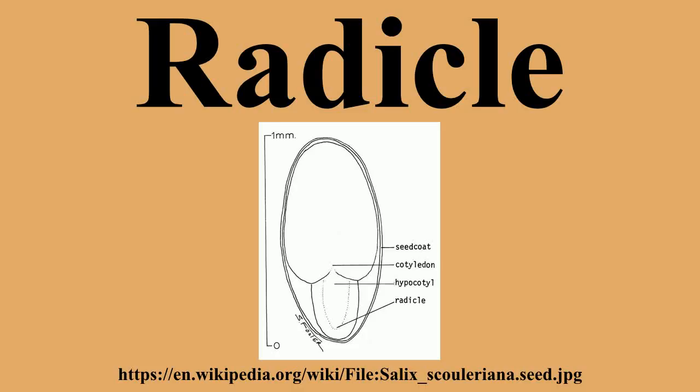In 1880, Charles Darwin published a book about plants he had studied, The Power of Movement in Plants, where he mentions the radicle: 'It is hardly an exaggeration to say that the tip of the radicle thus endowed acts like the brain of one of the lower animals.'